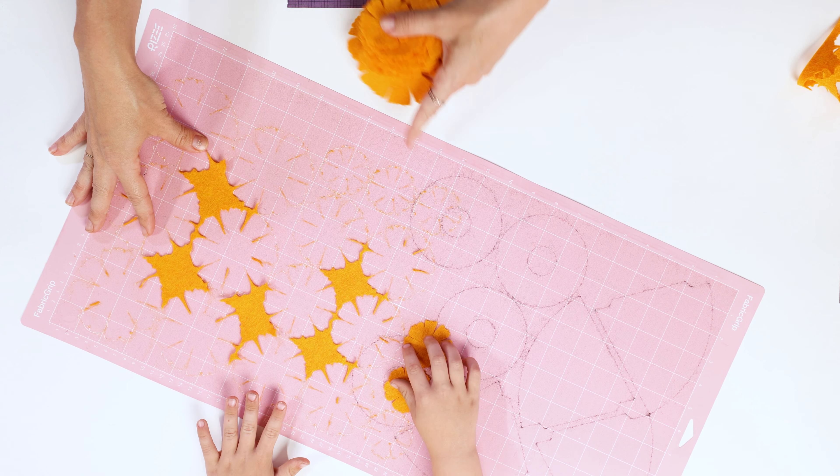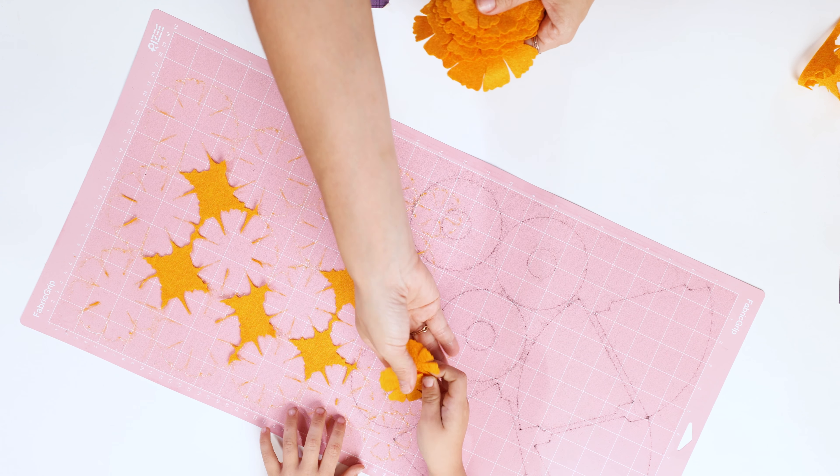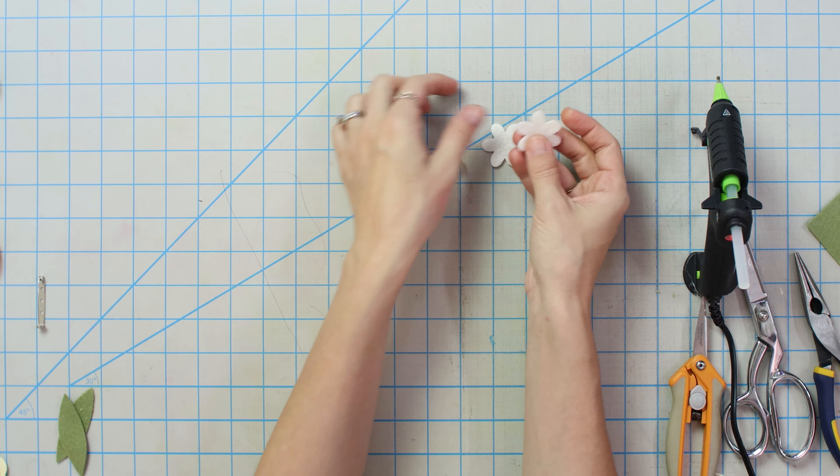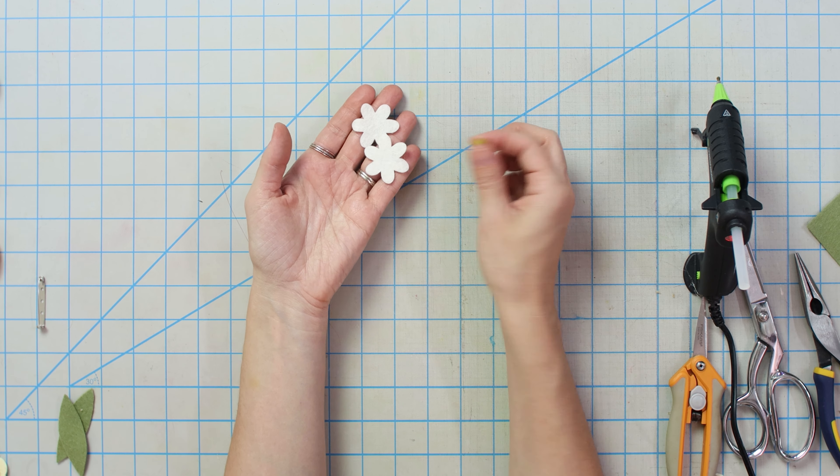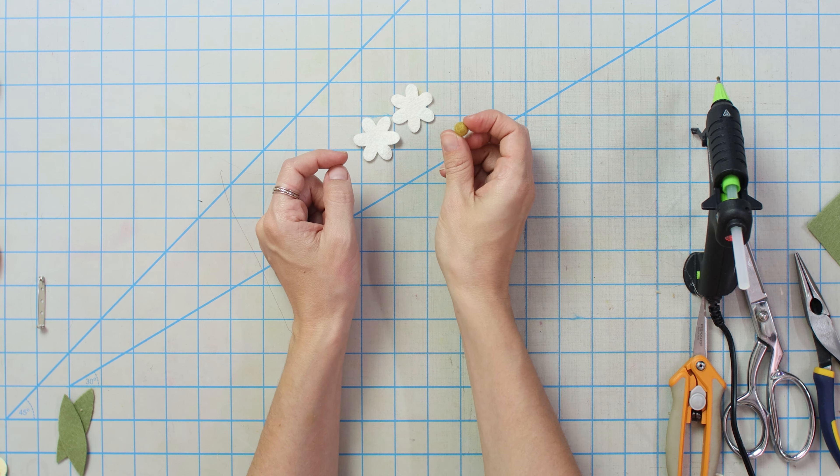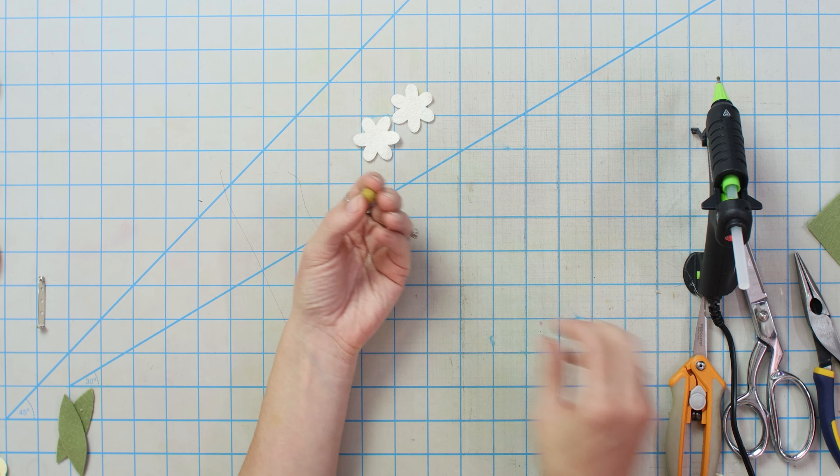Before we get started, I have a link below in the description to all the patterns that you can purchase for a very low cost in PDF and SVG format so that you can either hand cut all of these pieces or you can cut them on your Silhouette Cameo or Cricut Maker. If not, they're all basic shapes that you could probably hand cut on your own too.